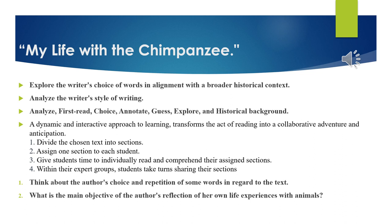To move on with the text itself, we're going to have an interactive activity — an approach to learning called the JECSO reading. We're going to divide the text into sections, assign the sections to students, and give them individual time to comprehend the text. We're going to end this lesson by thinking about the author's choice and repetition of some words, and we'll close with the challenging question: What is the main objective study of the author's reflection of her own life experiences with animals?